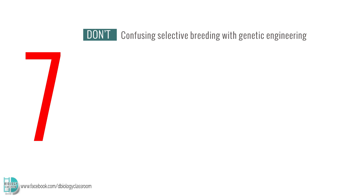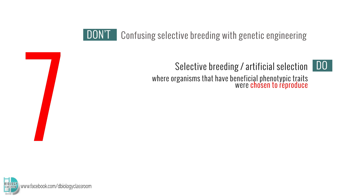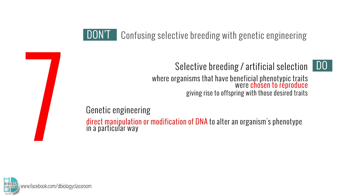Number 7: Confusing selective breeding with genetic engineering. Selective breeding, or artificial selection, is a process where organisms that have beneficial phenotypic traits are chosen to reproduce, giving rise to offspring with those desired traits. Genetic engineering is the direct manipulation or modification of DNA to alter an organism's phenotype in a particular way.